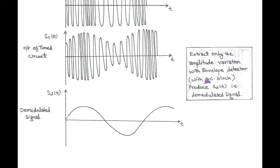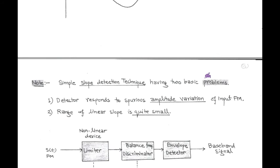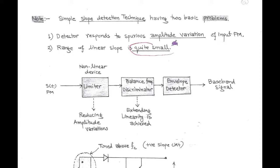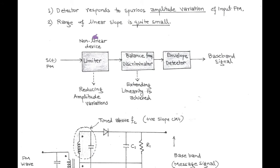In the envelope detector there is DC blocking. Now we note a point: in the frequency discrimination method, we use slope detection technique that has two basic problems. The first problem is unacceptable amplitude variation of the input FM wave. The second problem is that the range of the linear slope is quite small. In order to avoid these problems, a limiter followed by a balanced frequency discriminator is used before the envelope detector. Here, the limiter is a non-linear device that reduces the amplitude variations, while the balanced frequency discriminator extends the range of linearity of the slope detector.